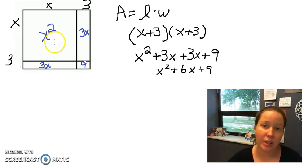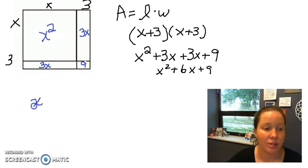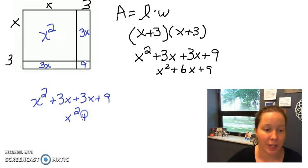And then the last little rectangle would be 3 times 3 is 9. So if we wanted to look at the area of the big rectangle it would be the area of all of these small rectangles added together, so it'd be x squared plus 3x plus 3x plus 9, again combining like terms x squared plus 6x plus 9.